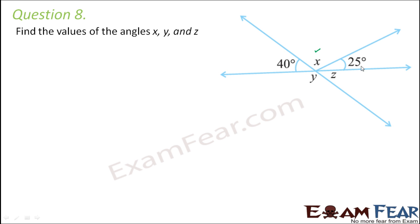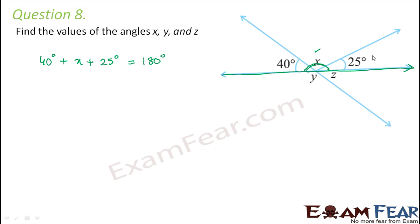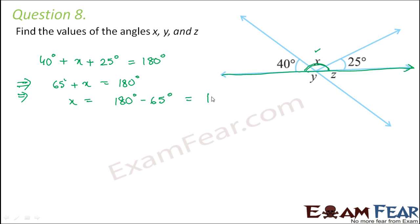When you look at this portion, you see that this is a straight line, so the entire angle would be 180 degrees. We can say that 40 degrees plus x plus 25 degrees is equal to 180 degrees, because all these angles together form a straight line. Therefore, 40 plus 25 is 65 degrees, plus x equals 180 degrees, so x equals 180 minus 65 degrees.